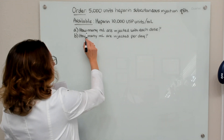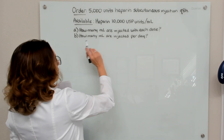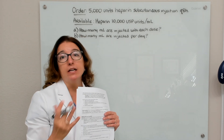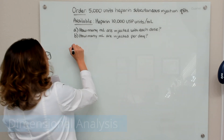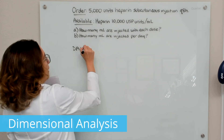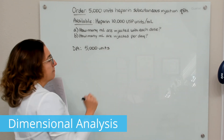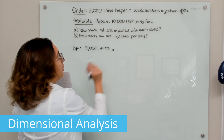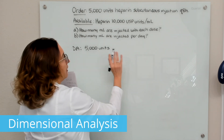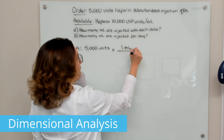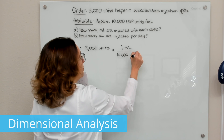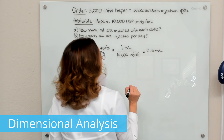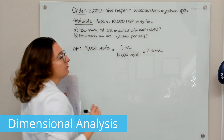In this problem we're asked how many milliliters are injected with each dose and how many milliliters are injected per day. For part A, let's use dimensional analysis. We start by writing down what is ordered — 5,000 units — and confirm units of measure are consistent across what's ordered and what's available. We multiply 5,000 units by the available concentration, putting milliliters on top and units on bottom so the units cross off and we're left with milliliters. With each dose, we administer 0.5 ml.